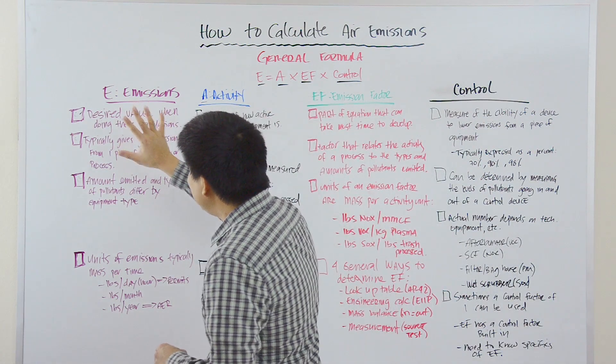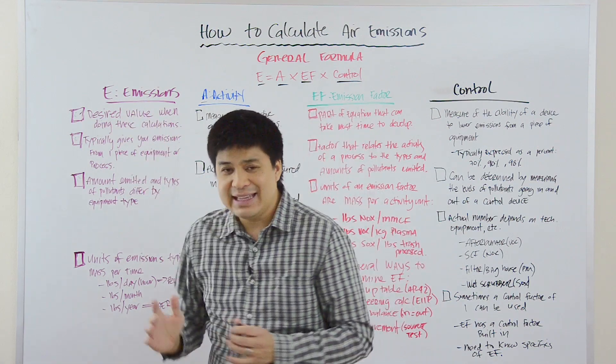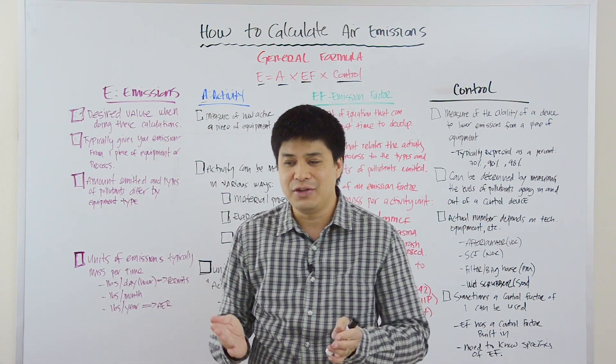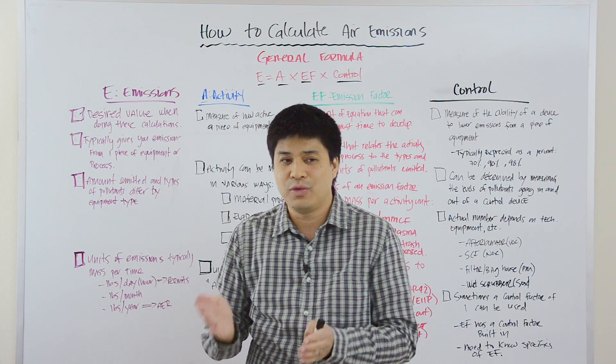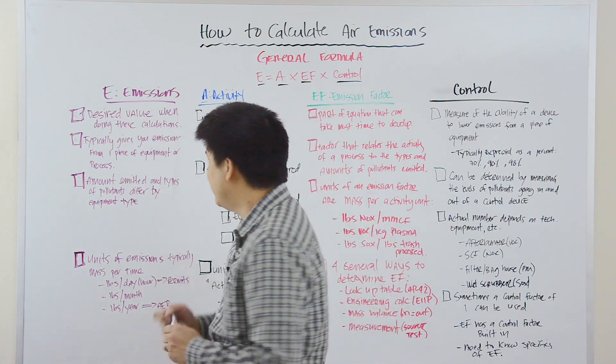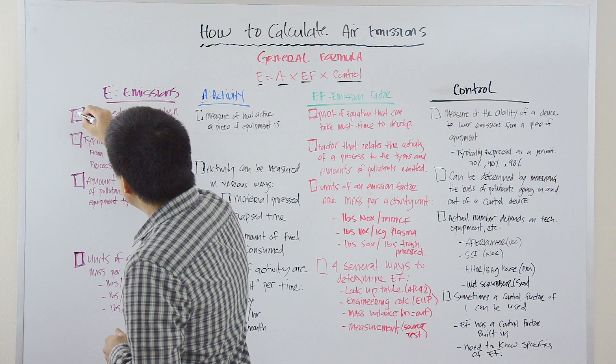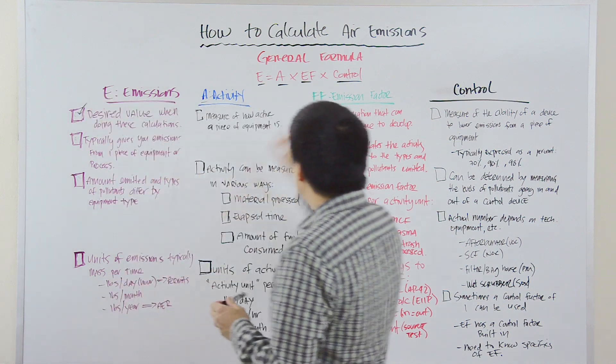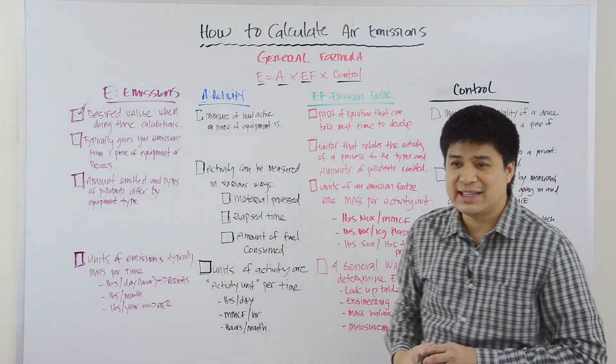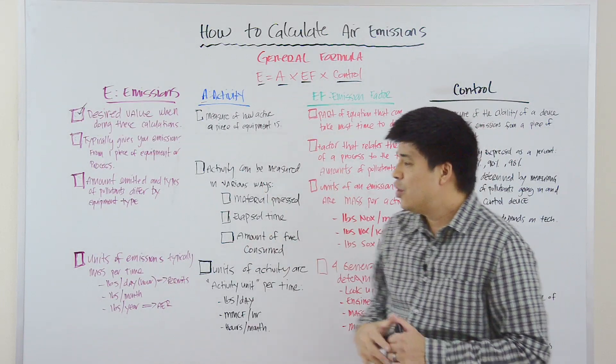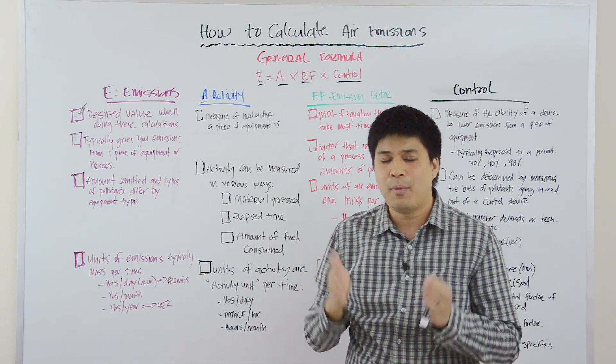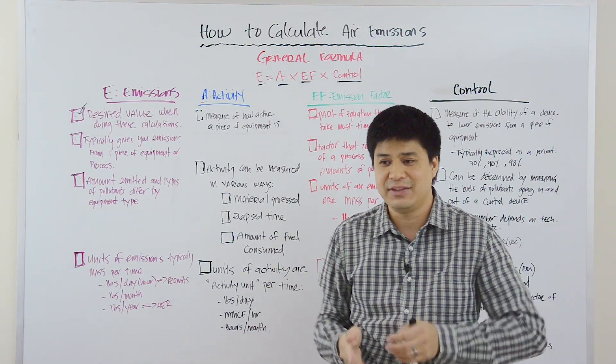So let's talk about E. E is the emission rate. It's the desired value or the value that you're after when you do these types of calculations. Now, because of the way that the equation is set up, this equation really gives you emissions from one process or one piece of equipment.